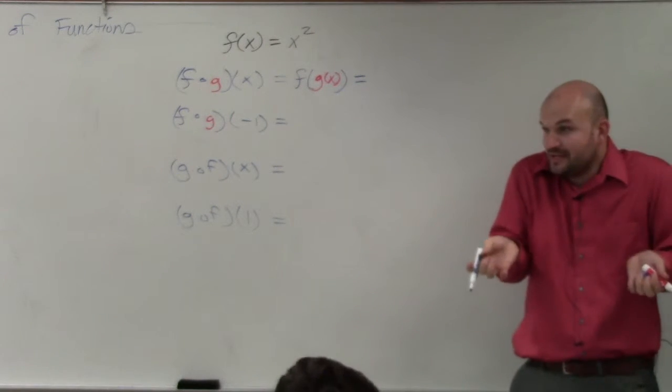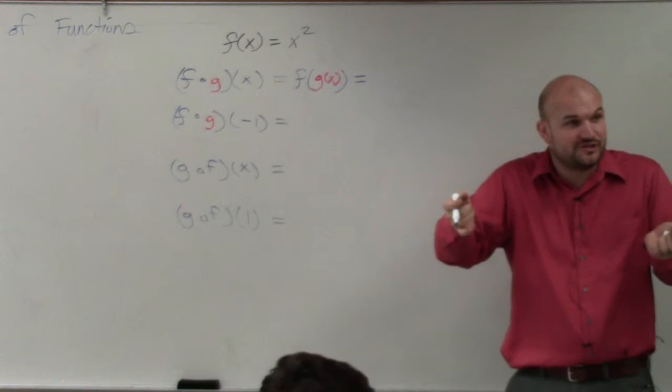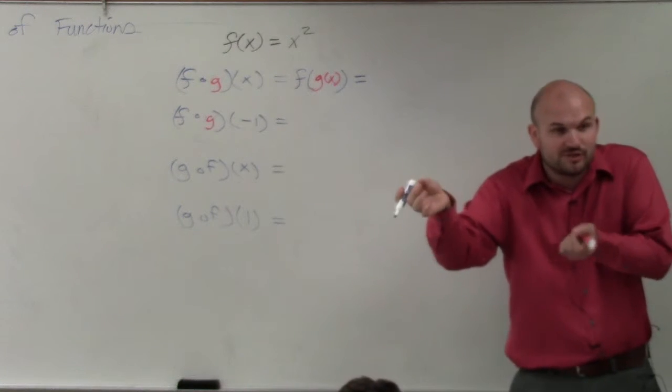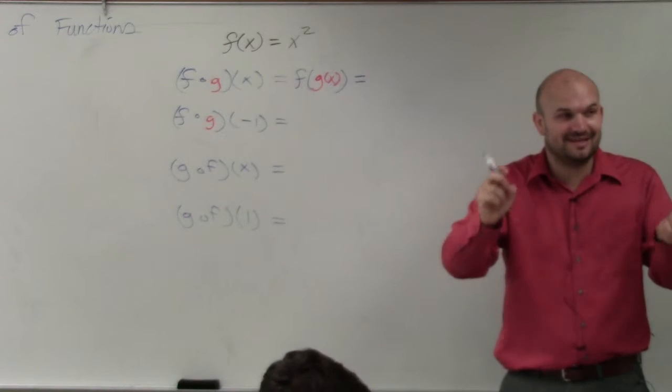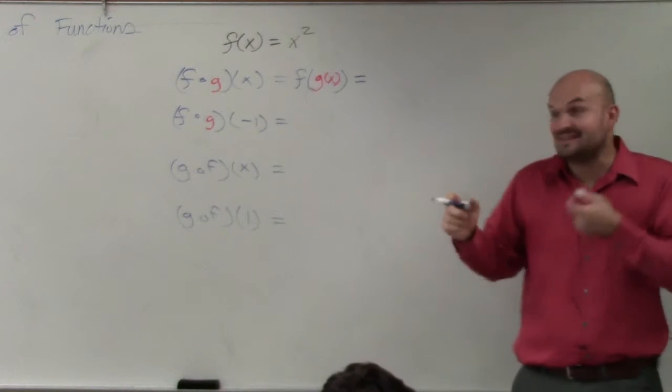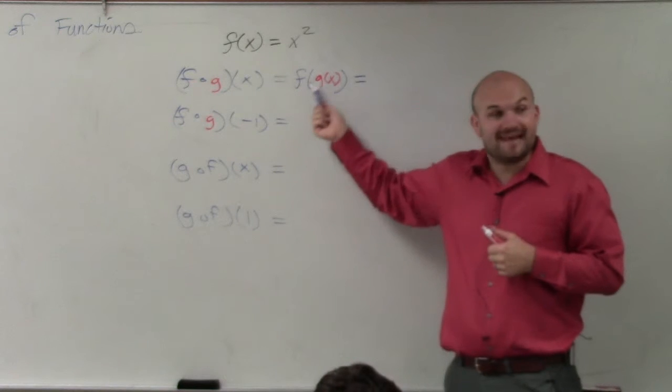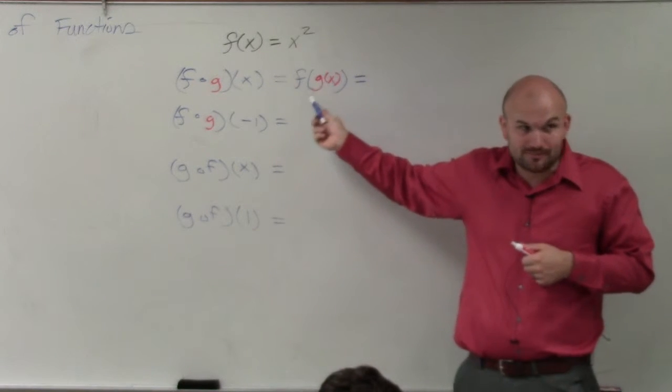Just remember how we evaluated on that quiz? We did f of negative 2. Where did you put negative 2 in for? You replaced that as the input variable. Now you're using a function as your input variable.